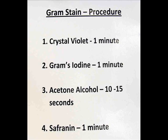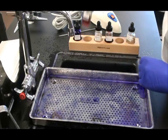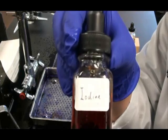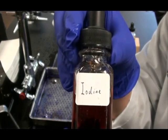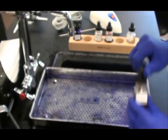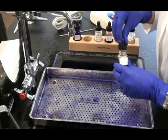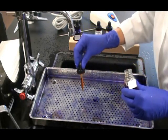My next step is to apply the mordant Grams Iodine. I will leave that on for one minute. What the mordant does is it binds with the Crystal Violet to make a big molecule. This big molecule gets trapped in the many layers of peptidoglycan in the Gram positive cell wall.